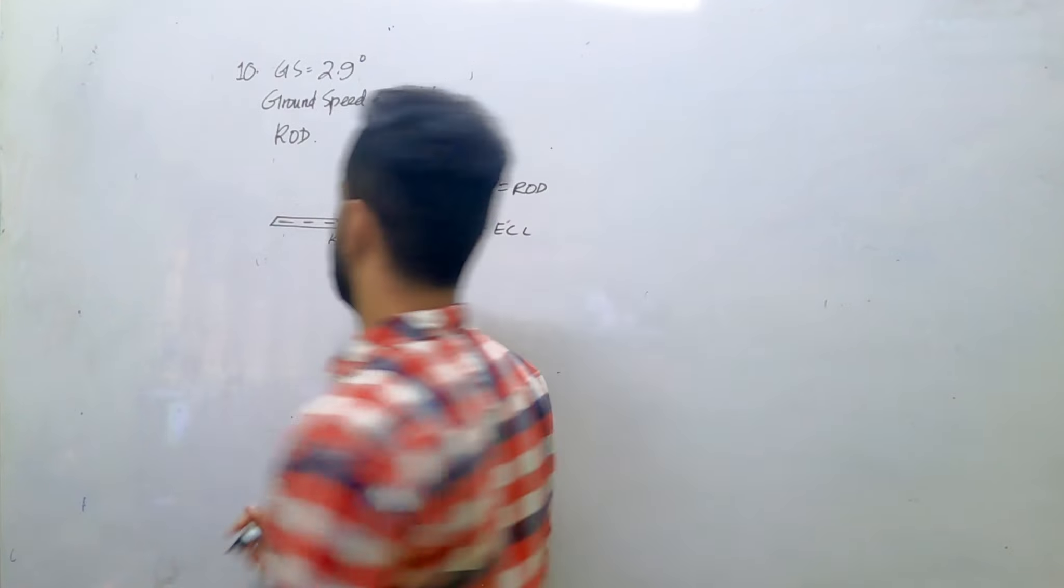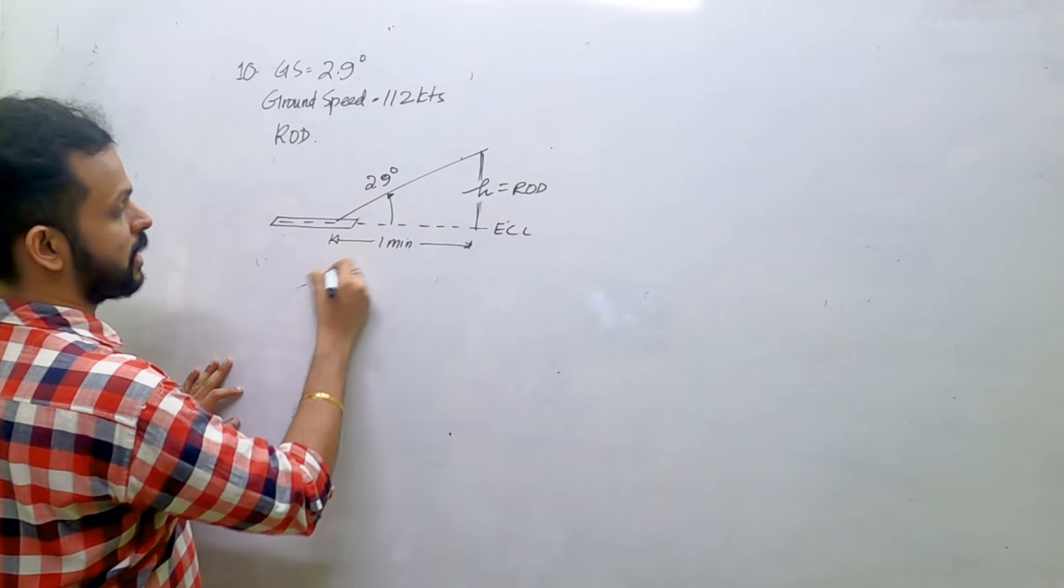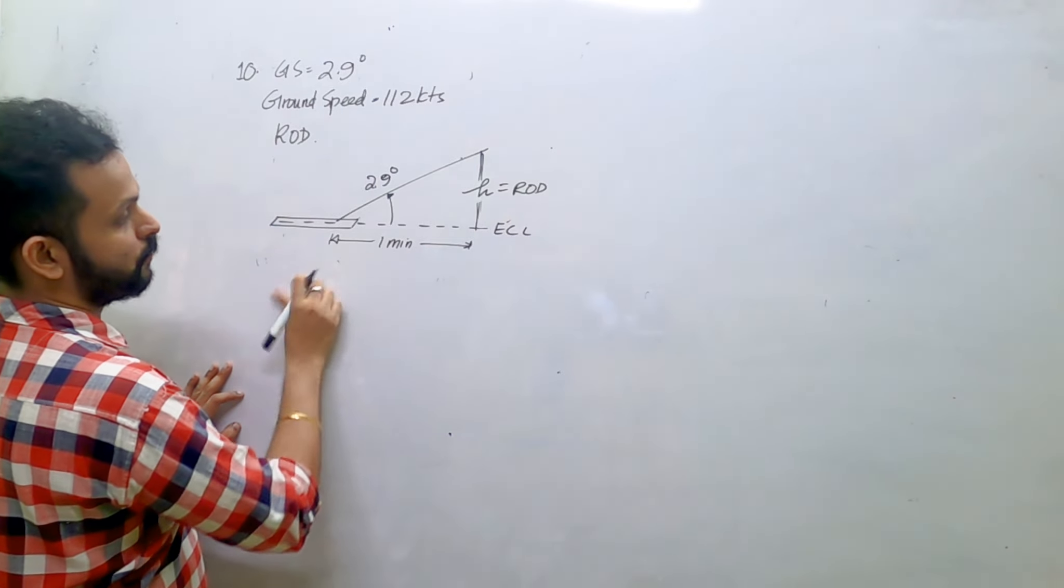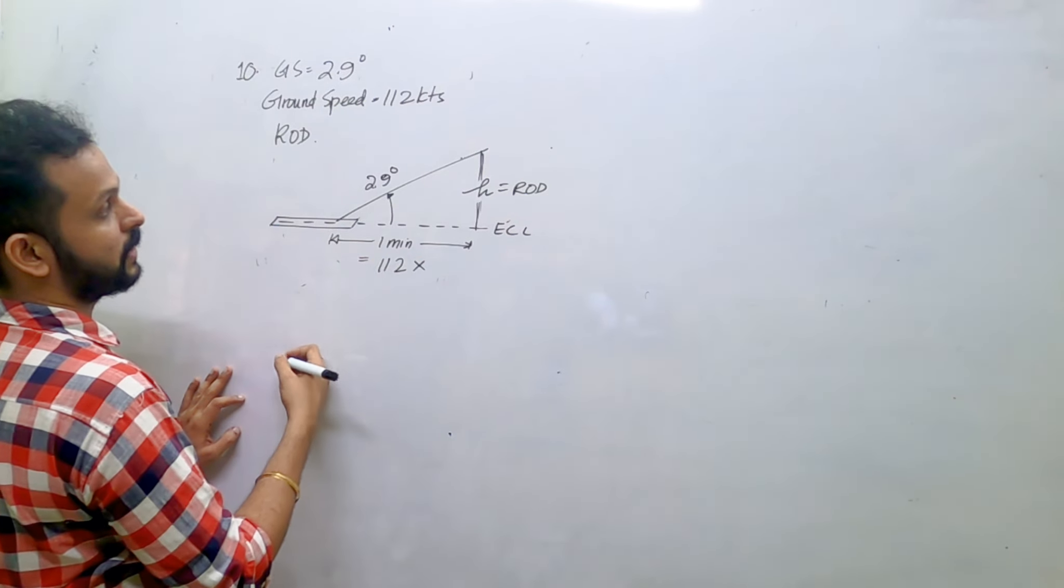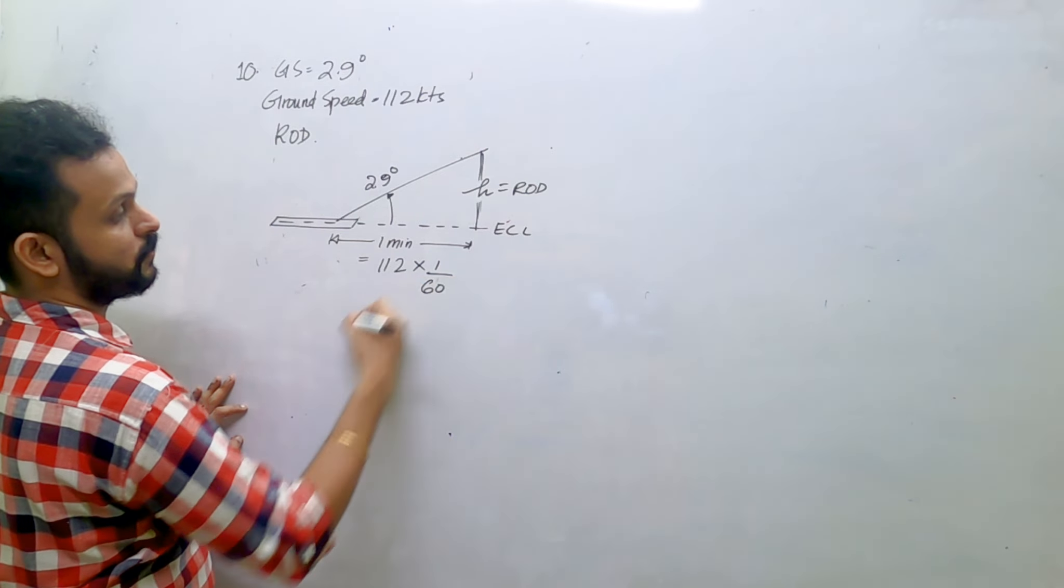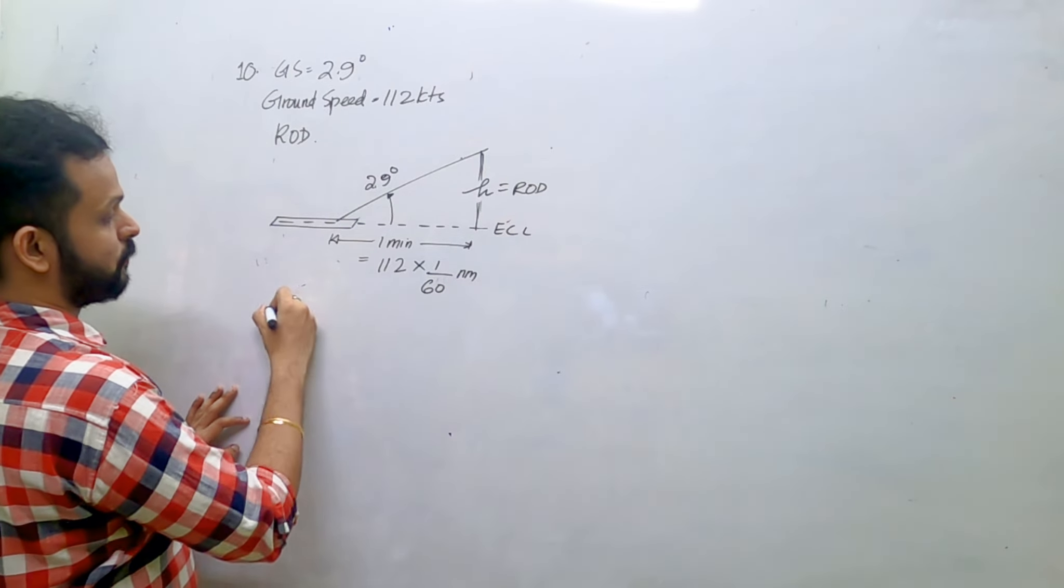So this height - how will you find height and glide slope? First you have to find out one-minute distance. How will you find one-minute distance? You take the ground speed which is 112, you multiply that with one minute, which is 1 divided by 60. This is so many nautical miles.